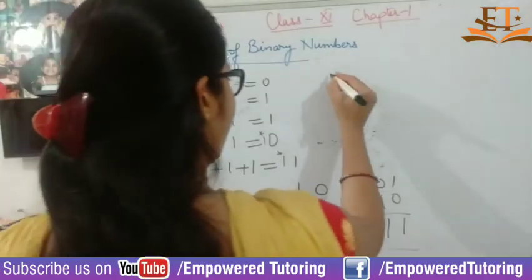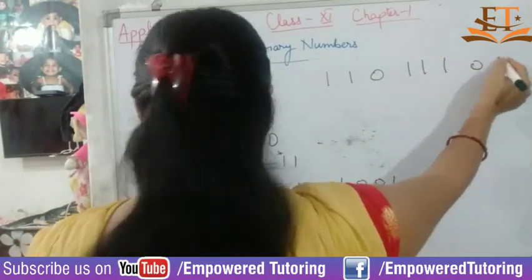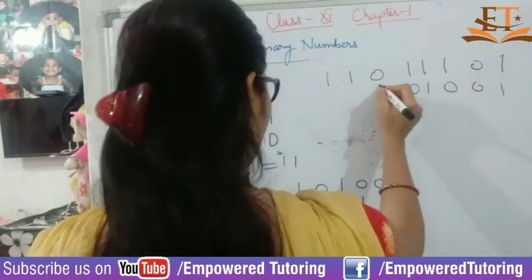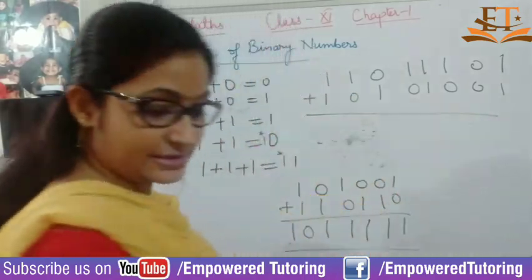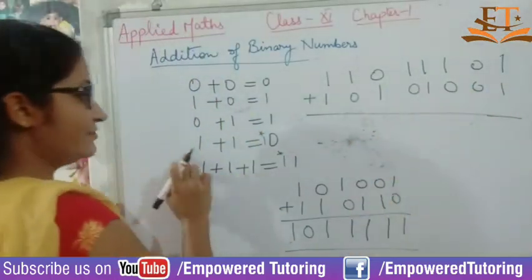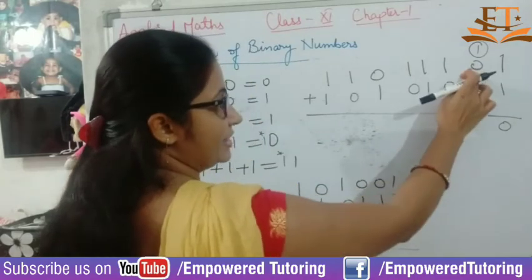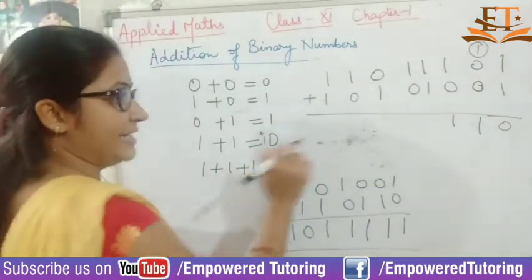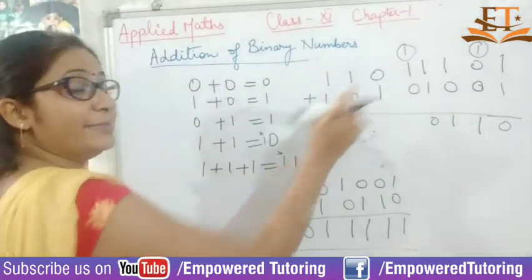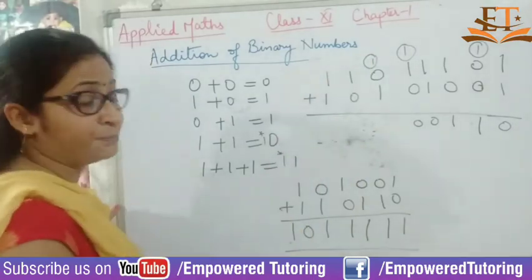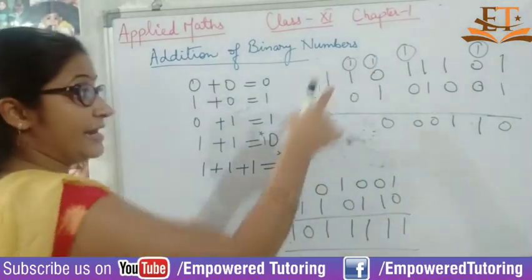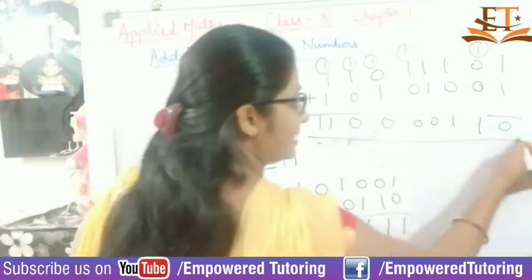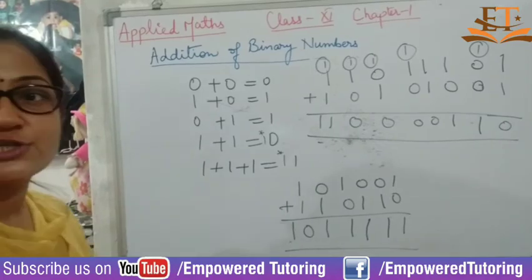One more example: 11011101 added to 10010101. 1 plus 1 gives 10, so 0 here and carry 1. Then all are 0s and here it is 1, so you get 1. 1 plus 0 gives 1. Then 1 plus 1 is 10, so 0 carry over 1. Again 1 plus 1 is 10, so 0 carry over 1. Again 1 plus 1 is 0 carry over 1, and again 1 plus 1 is 0 carry over 1. Now there are three 1s, so 1 plus 1 plus 1 gives 11.